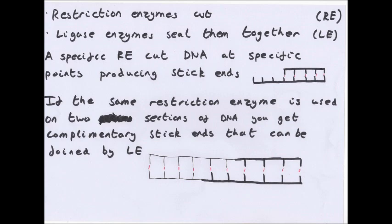Restriction enzymes are just an enzyme that can cut DNA. Restriction enzymes are also known as restriction endonucleases and they cut through DNA at specific points. Each restriction enzyme has a very specific sequence of bases it will cut.